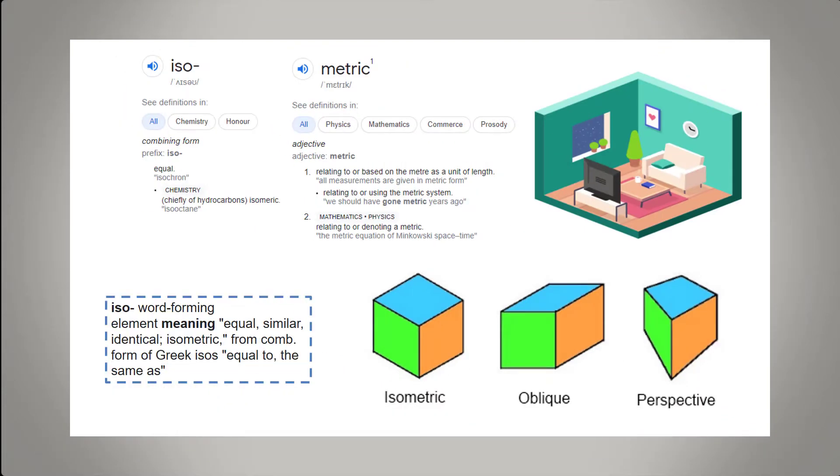ISO is actually Greek, it comes from the Greek for isos and it means equal or the same as. Whereas metric is actually French origin word and it means a specific unit of measurement.